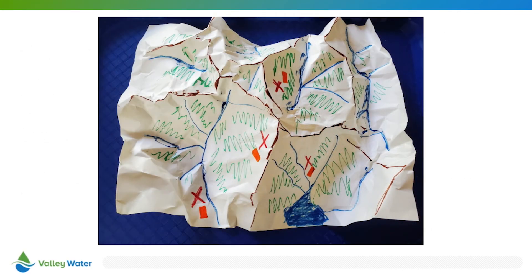Now we have our completed watershed maps. Your map probably looks quite different from the one in the picture, and that's a good thing — everyone's map is going to be a little different, just like each watershed is different. Before we move on to the final step, take one last look at your maps. Notice where you chose to put your houses and storm drains, and see where you predicted the water would flow during times of precipitation.